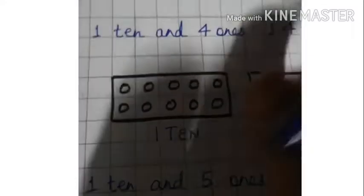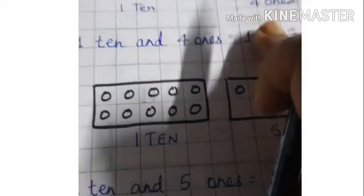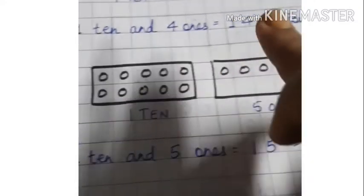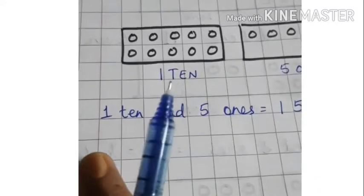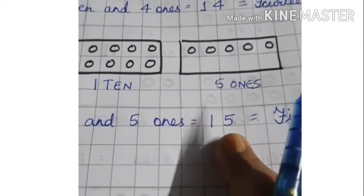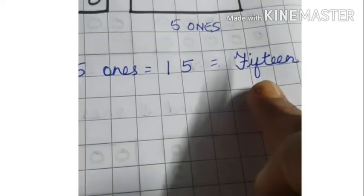So agla picture, the next picture I have made in the same manner. One ten and four ones. One ten and four ones, so we have to write 1 ten, 4 ones, fourteen. One ten, five ones. One ten and five ones is equal to 15, fifteen. And the number is fifteen.